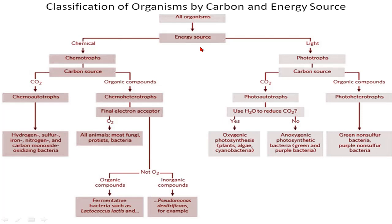This energy might come from either a chemical source or a light source. If the energy is coming from a chemical source, the organisms are known as chemotrophs, and if the energy is coming from a light source, the organisms are known as phototrophs.